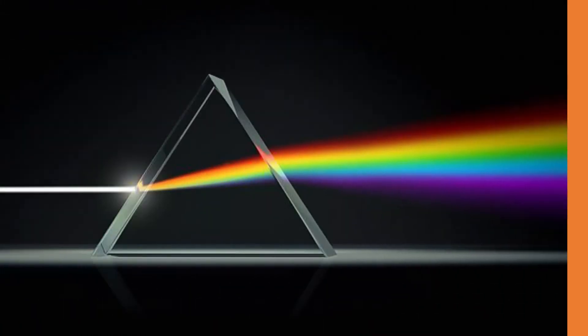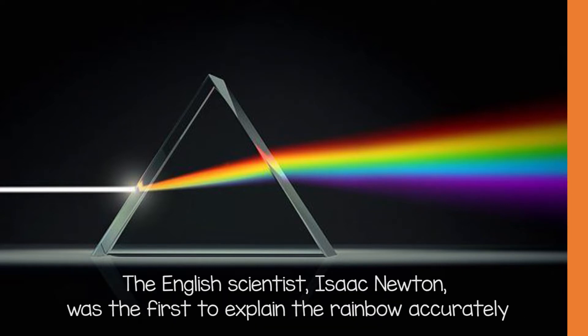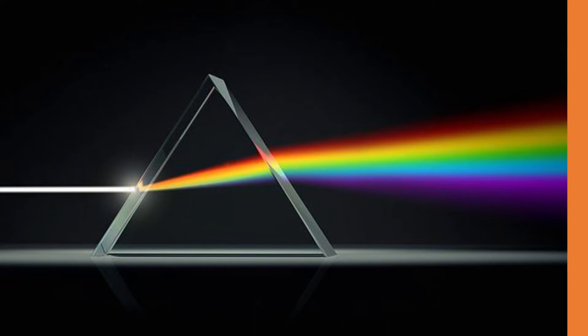Appears of transparent material that bends light into the colors of the rainbow. Cahaya yang kita lihat disebut white light atau cahaya putih. The English scientist Isaac Newton was the first to explain the rainbow accurately about 300 years ago. He showed that sunlight, also called white light, is made of different colors.